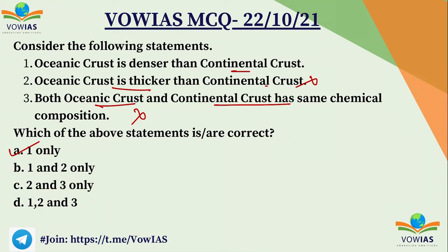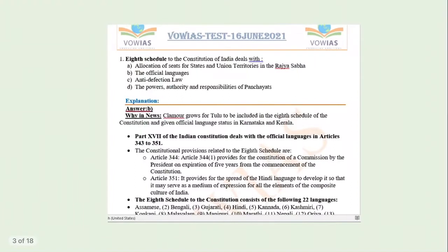To summarize: oceanic crust differs from continental crust in several ways — it is thinner, it is denser, it is younger, and it is of different chemical composition. And guys, as you know, daily we upload 5 MCQs based on current affairs. You can find the PDF of these MCQs in the Telegram channel. The Telegram channel details are in the description — you can just go and have a look.